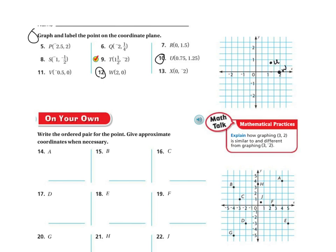Let me do a couple more — let's find A. Here's my A right there. I went over 1, 2, 3, 4 holes, and then up 1, 2, 3, 4 — so my plotted point is going to be (4, 4). The rest of these should be pretty easy. Do them on your own with a partner, and I'll be available for you. Good luck.